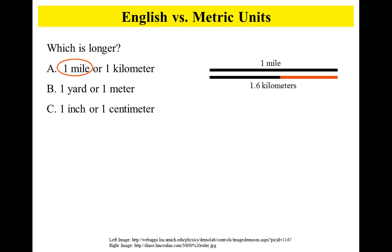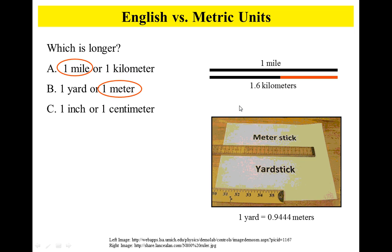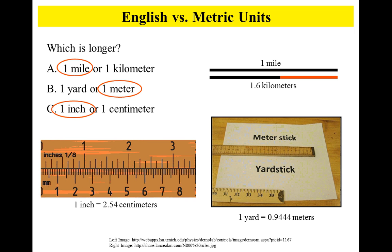A mile is 1.6 kilometers, so you can fill that in for number two. A yard is 0.94 meters, so a meter is longer than a yard. An inch is 2.54 centimeters, so an inch is longer than a centimeter. Use this information to complete numbers one and two.